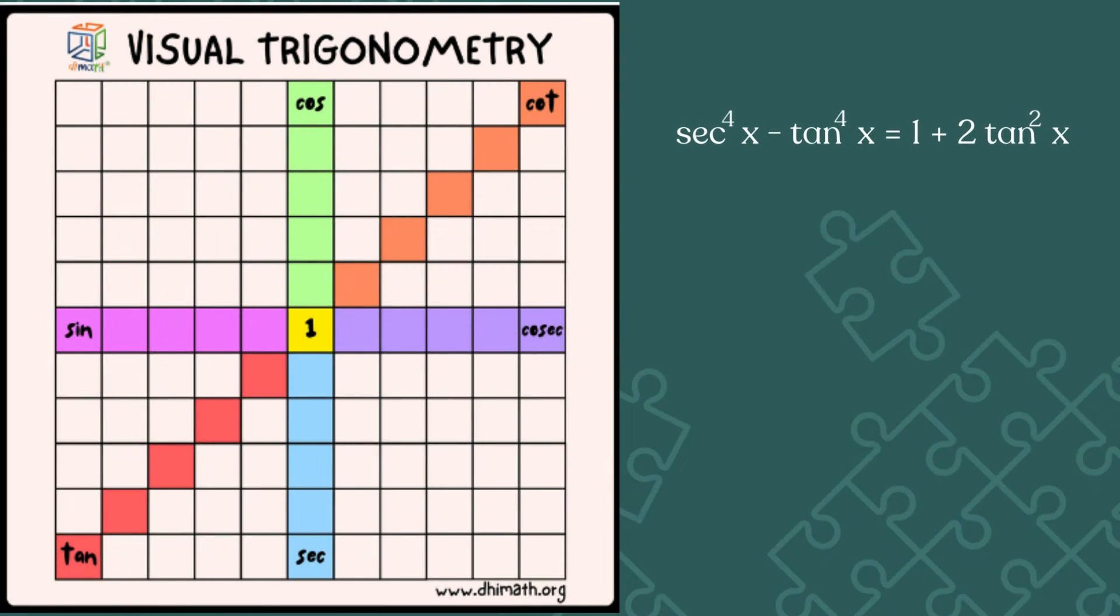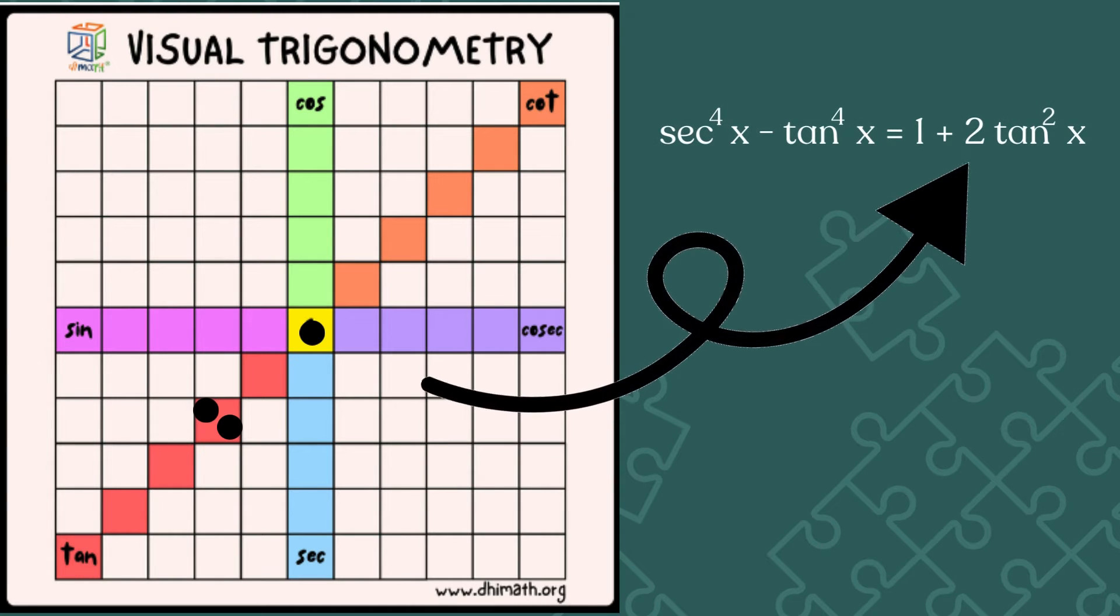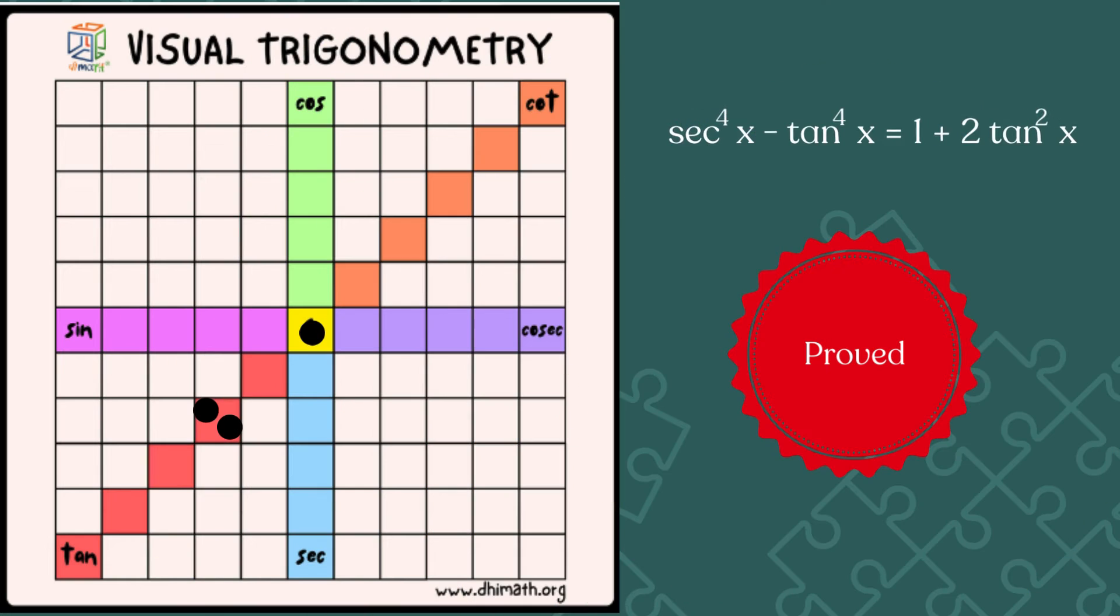sec⁴x - tan⁴x = 1 + 2tan²x. Let's put the left-hand side expression on the board - one dot in the sec⁴x box and one antidot in the tan⁴x box. We explode the dot into two dots. Now we explode the dot on the left into two dots. Now we will explode the dot on the blue box into two dots. The dot-antidot pair cancel each other and we get the right-hand side expression, and hence proved!